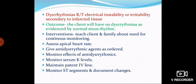Third nursing diagnosis: dysrhythmia related to electrical instability or irritability secondary to infarcted tissue. Outcome: the client will have no dysrhythmias as evidenced by normal sinus rhythm. Interventions: teach client and family about the need for continuous monitoring; assess apical heart rate; administer anti-dysrhythmic agents as ordered; monitor effects of anti-dysrhythmic medications; monitor serum potassium levels; maintain patent IV line to infuse appropriate IV fluids and drugs; monitor and document ST segment changes.